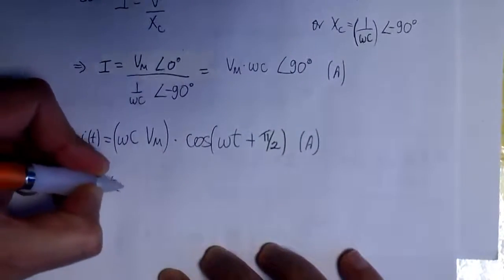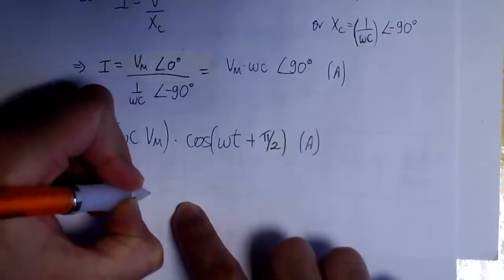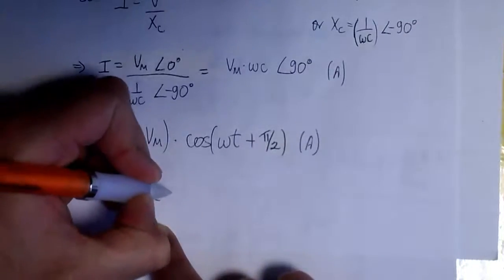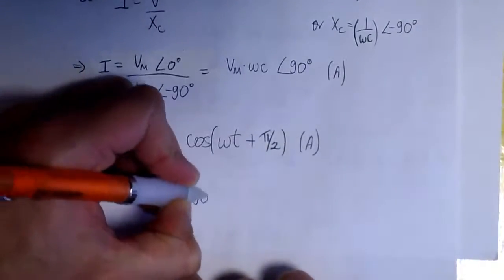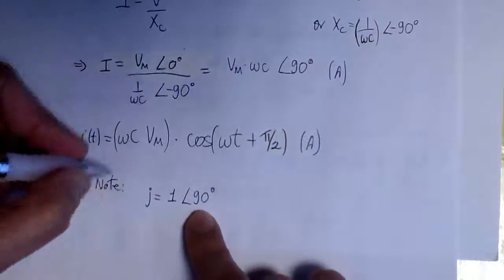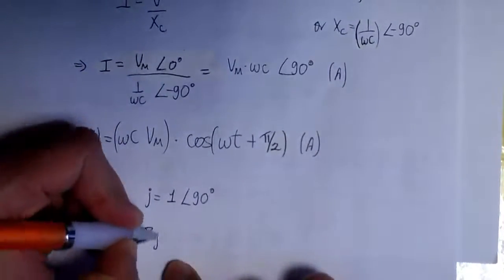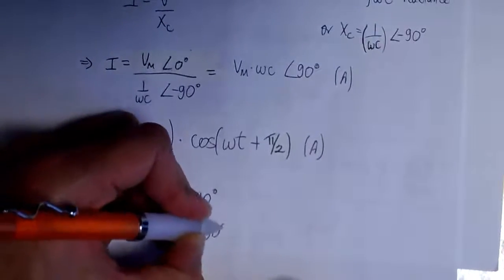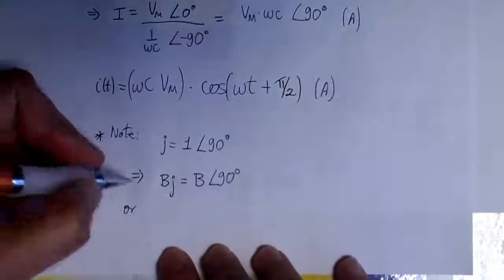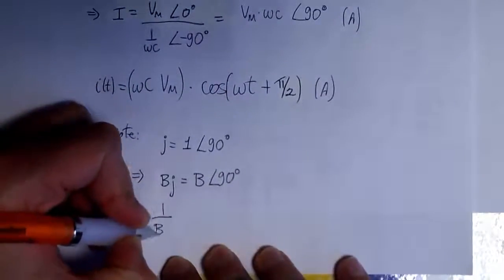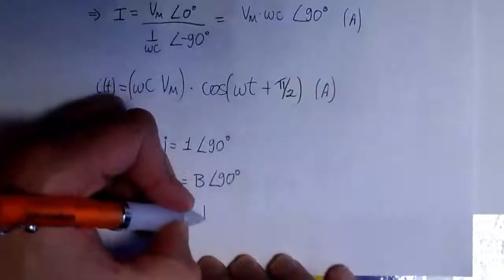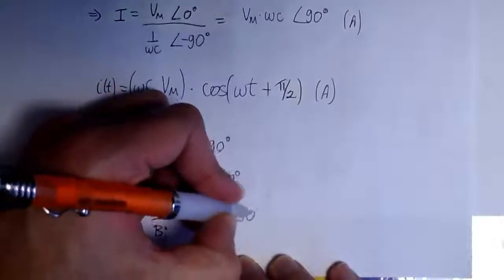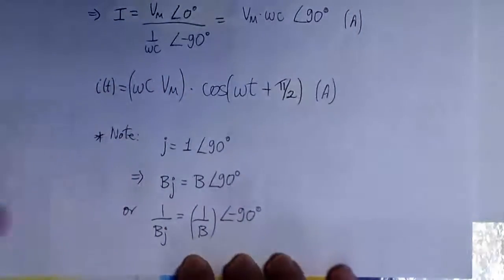As a note: the complex number j has a magnitude of 1 and an angle of 90 degrees. So if we have some constant b times j, that complex number has a magnitude of b and an angle of 90 degrees. And if we have 1/(bj) for some value b, the magnitude is 1/b and the angle is minus 90 degrees — just in case you're not familiar with j.